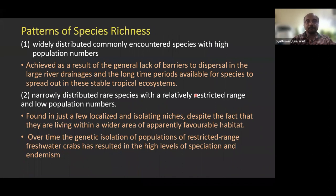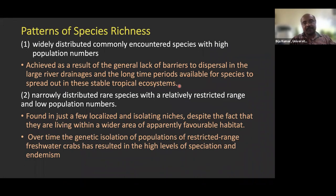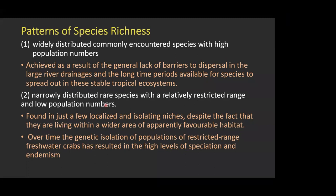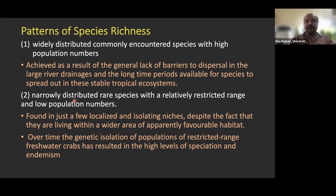Looking at patterns of species richness: very few freshwater crab species are extensively distributed, and this occurs where there are no geographical barriers and larger river drainages exist. When geographical barriers are present, species exhibit narrow distribution patterns, which is why higher endemism is expected in freshwater species.